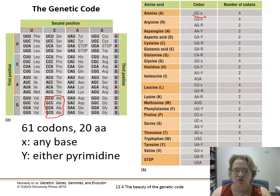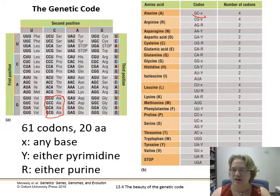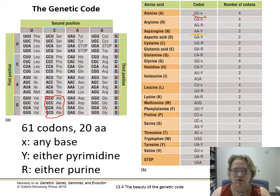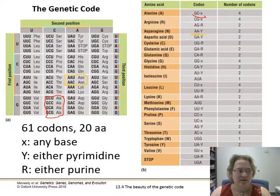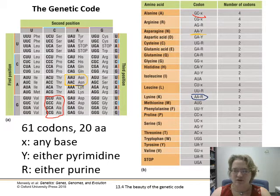We can get a little more specific. Here's asparagine — we've got AA, and anything that starts with AA and then Y has either of the pyrimidines at the end. So it's AA with the pyrimidine, which would be uracil and cytosine. And here's another example: AA-R, lysine. Either of the purines — either A or G — would fit, and then we get a lysine.